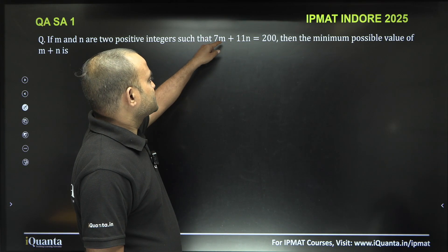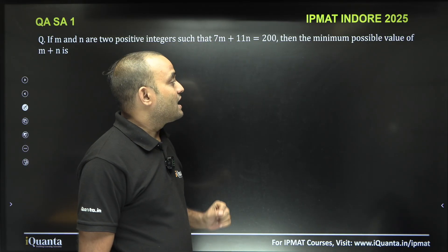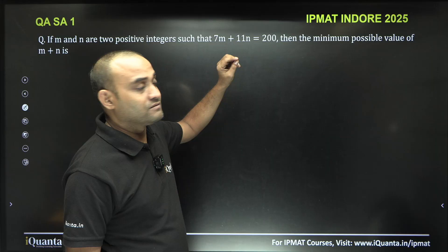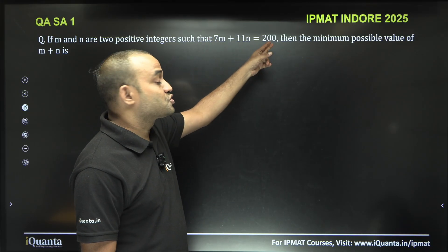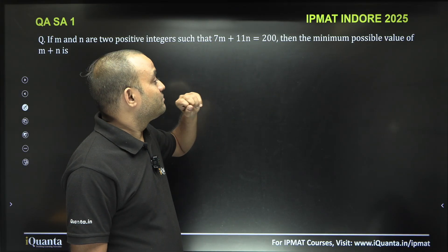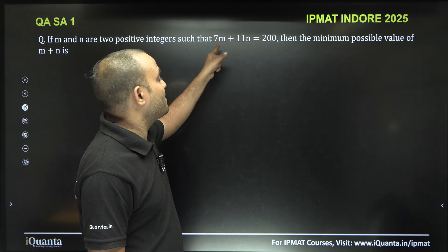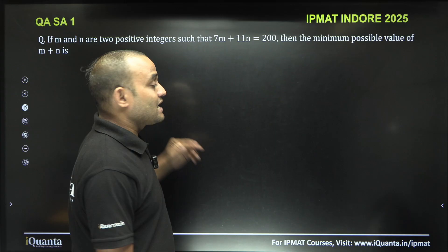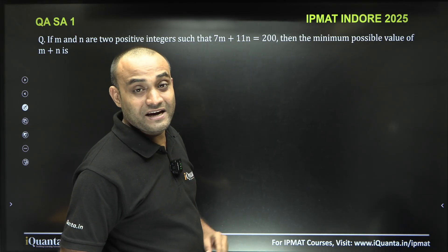The coefficient of m is 7, coefficient of n is 11. As we increase the value of n, m will decrease. So we can reach 200 easily when n is maximum and m is minimum, and then m plus n will also be minimum. So let us try to maximize n here.